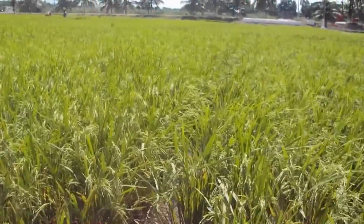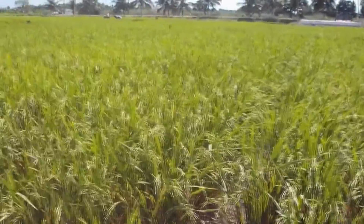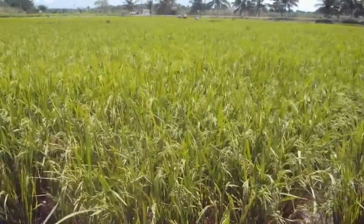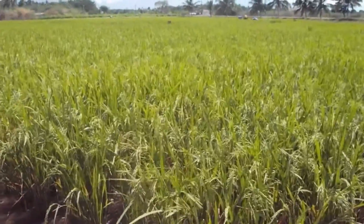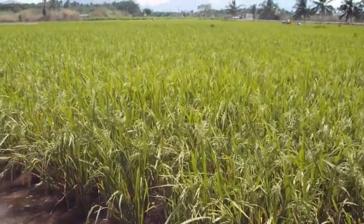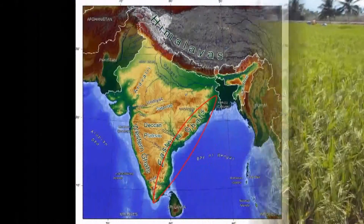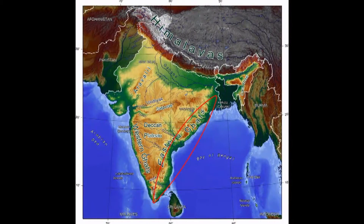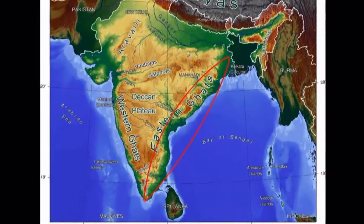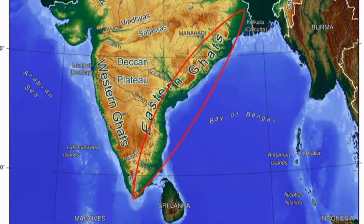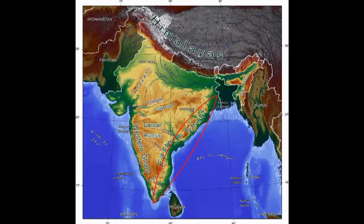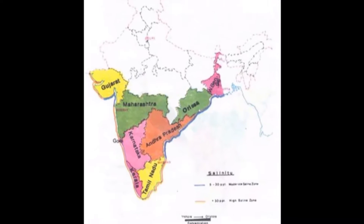In India, rice occupies 24% of the country's cropped area and 45% of total cereal production. Major rice fields are present in coastal regions which experience high salinity and flood almost every year. In India and Bangladesh, farmers lose 4 million tons of rice due to submergence, and in India alone 9.38 million hectares of area are affected by salinity.